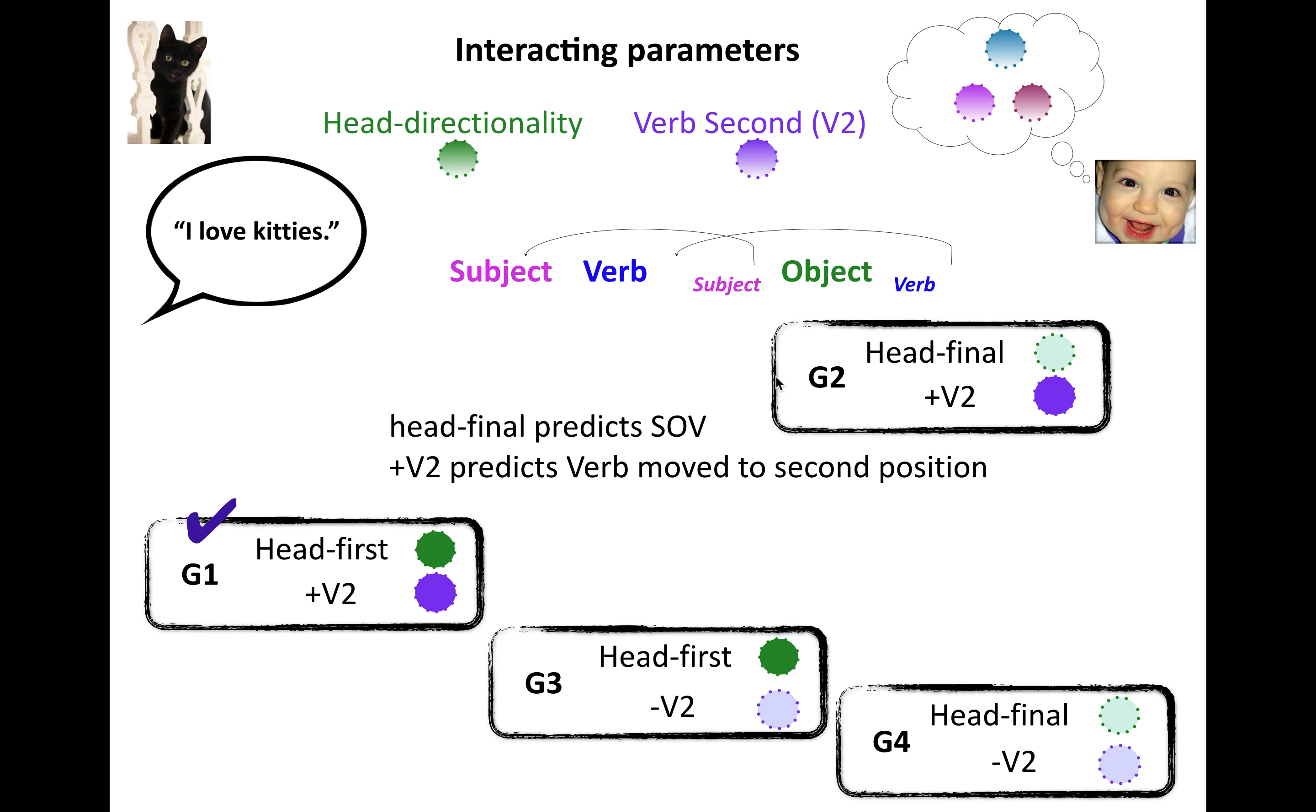What about grammar two, where you have head final plus verb second? Well, this is actually very German of us. So now you start with object verb in the underlying form, right? Because that's your object verb. And then you've moved the verb to the second position and the subject to the first position to get the observable order that we actually see. So this grammar is also compatible with this observable data point.